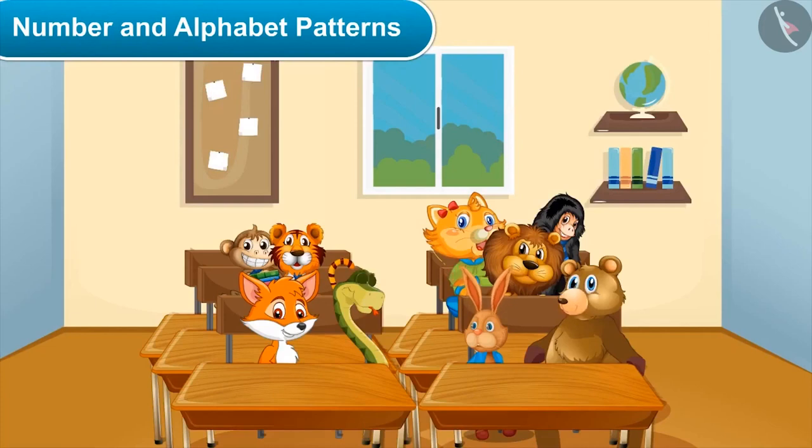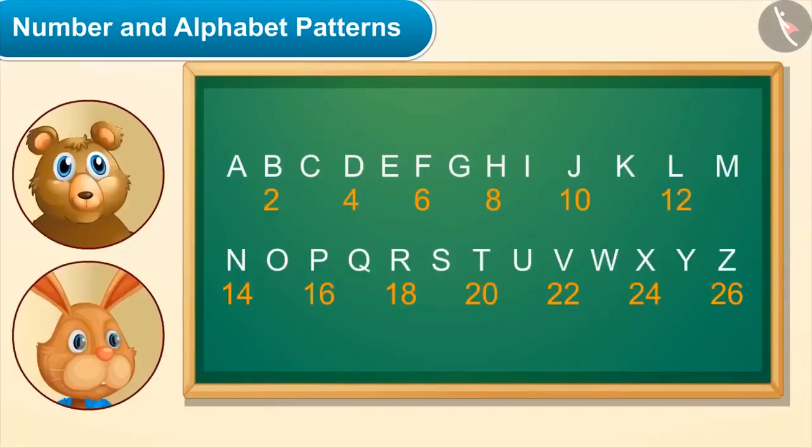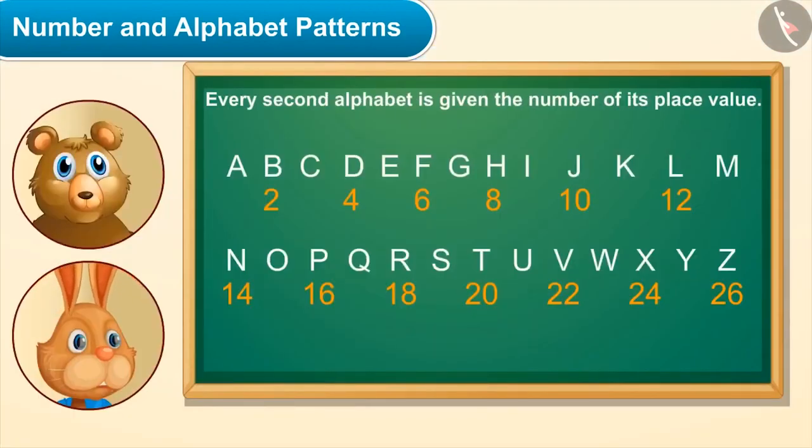Can you make any more patterns which has both numbers and alphabets? Hey, you can also write codes using both numbers and alphabets. This can be used in sending secret messages to anyone and you can make code using any rule of your choice. Like, look I have given every second alphabet its place value as the number. Now you say something. I will write it in code. I am very happy today.